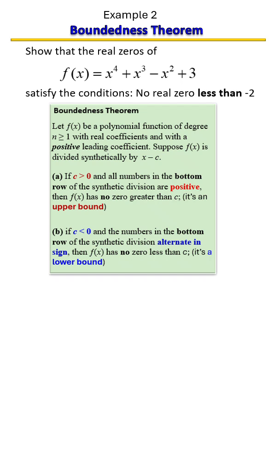We're going to use the boundedness theorem to show that this polynomial has no real zero less than negative two. So the number we were given is negative two.